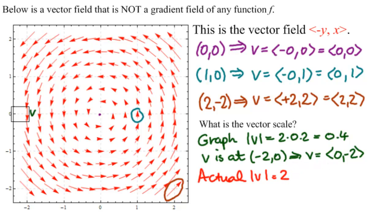So as we know, we take this number divided by this number to get the vector scale. So the vector scale is 0.4 divided by 2, equal to 0.2. So all their actual magnitude has been multiplied by 0.2 to get their depicted magnitude.